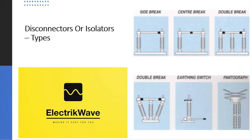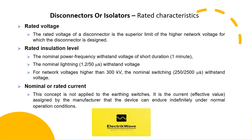Various types of Disconnectors include side brake, center brake, double brake, earthing switch, and pantograph. Types are defined considering the closing and opening of the main blades of the Disconnector. These definitions are based on standard IEC 62271-102, alternating current Disconnectors and Earthing Switches.